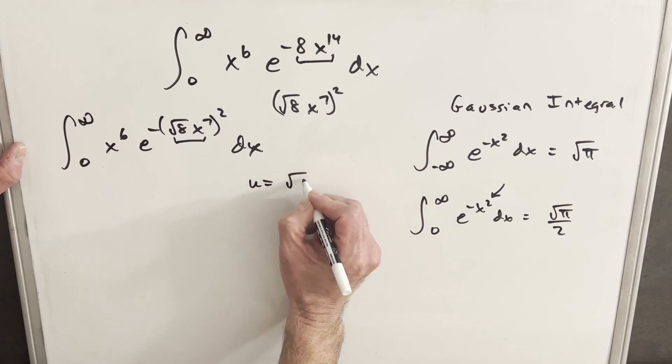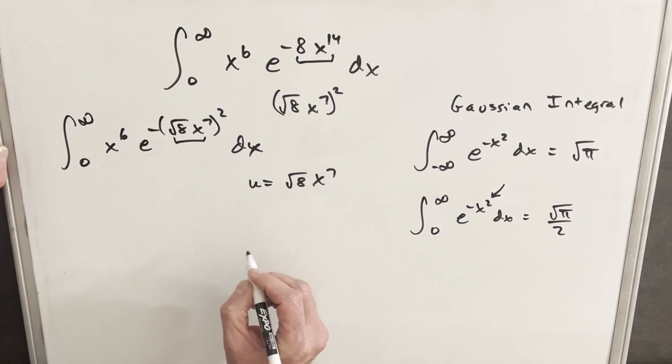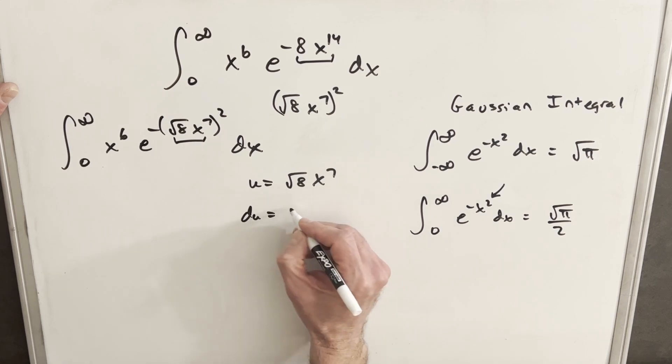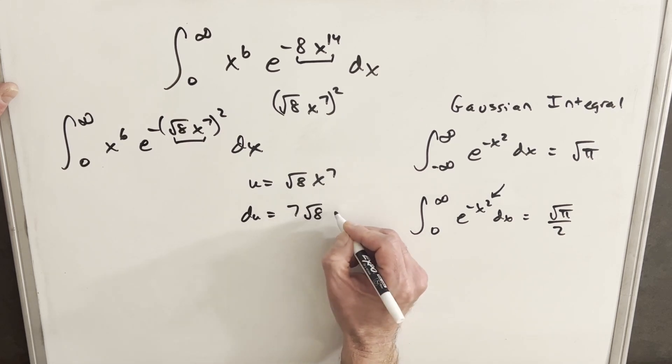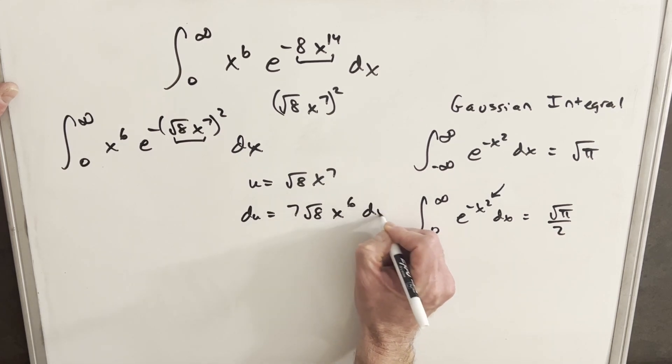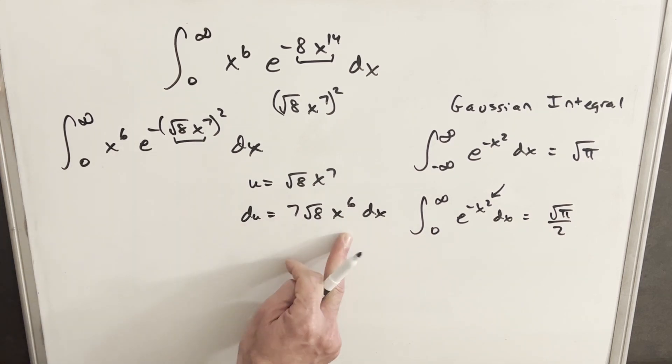So my u is going to be square root of 8 x to the 7th. And we'll take our derivative, so our du is going to be 7 square root of 8, just using power rule, x to the 6 dx. And of course that's pretty convenient because we have our x to the 6th right here.